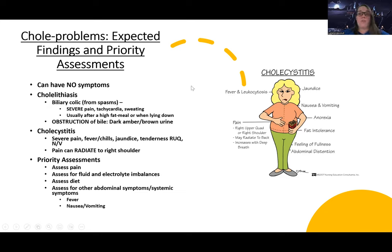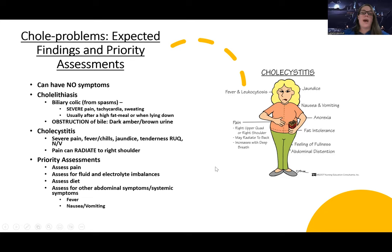With cholecystitis — inflammation of the whole gallbladder — patients will have more systemic issues: severe pain usually in the right upper quadrant that can radiate to the right shoulder, systemic signs of infection and inflammation like fever and chills, jaundice, nausea, and vomiting. Overall, assess for pain, fluid and electrolyte imbalances, diet or any risk factors, and other signs and symptoms like fever, nausea, and vomiting.